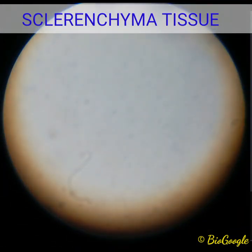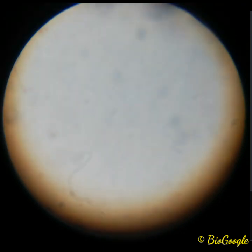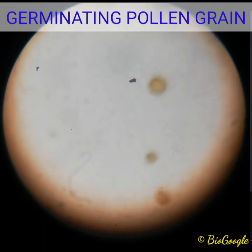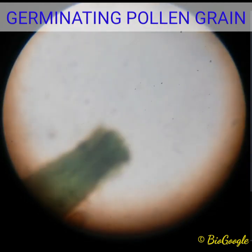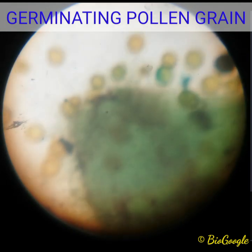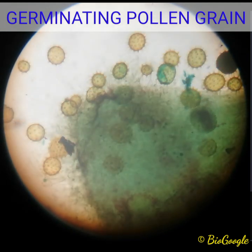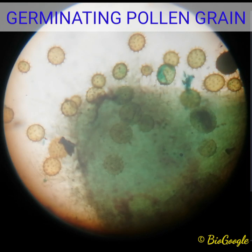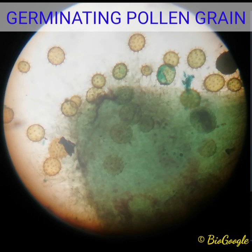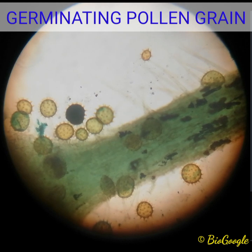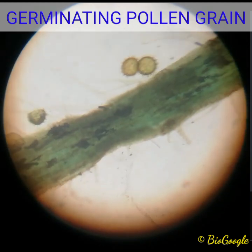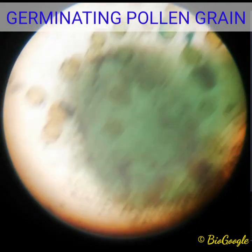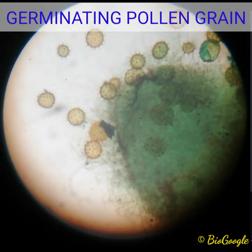Next is one of the interesting slides — pollen grain germinating on the stigma. You can see the pollen grains here. When we study the structure of pollen grain, we discussed that the pollen grain is covered by two layers: exine and intine. Exine has special designs over it, and here you can clearly see the exine with the architecture on it. Whatever the blue part here, that is the stigma. You can see the stigma of any one of the plants — and through that stigma in the style, the pollen tube will be formed. You can clearly see the pollen grain and the stigma of the flower.